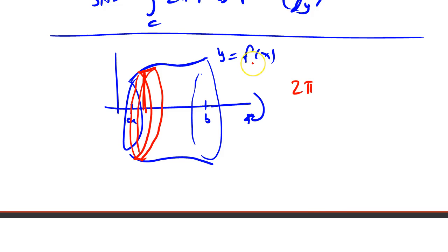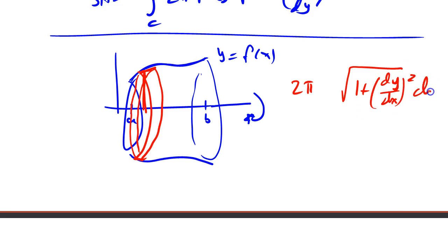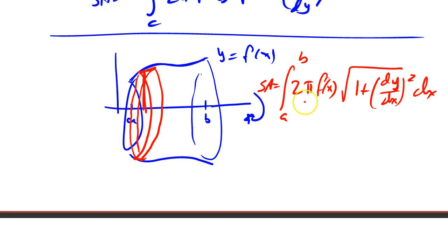So it's 2π times y. Since I have y as a function of x, I want the arc length as the square root of 1 plus (dy/dx)² dx, so this integral is in terms of x. I need the radius in terms of x — well, the radius in terms of x is y, and y is f(x). Integrating from a to b, that's the surface area: still 2π times a radius times a little bit of arc length, but that radius is now the y value, and since I'm integrating with respect to x, I write that y value as a function of x.